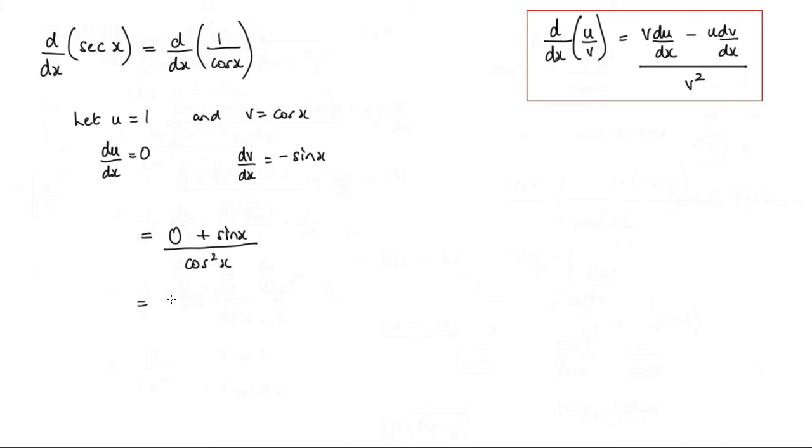So what I actually have here is sin x over cos squared x. Now I can actually split this. I can write it as sin x over cos x multiplied by 1 over cos x.